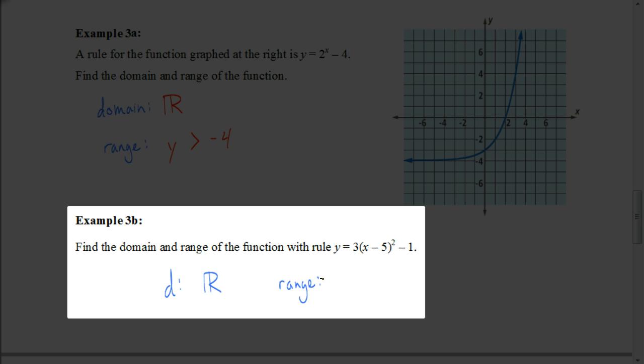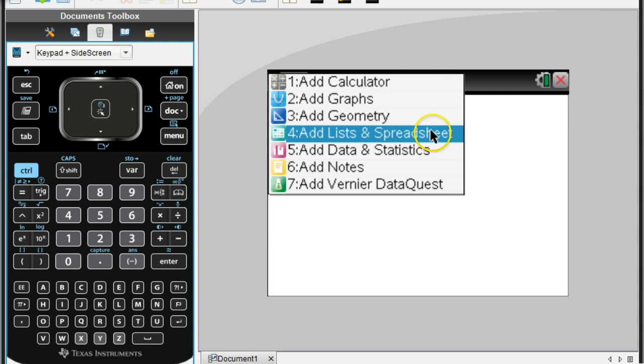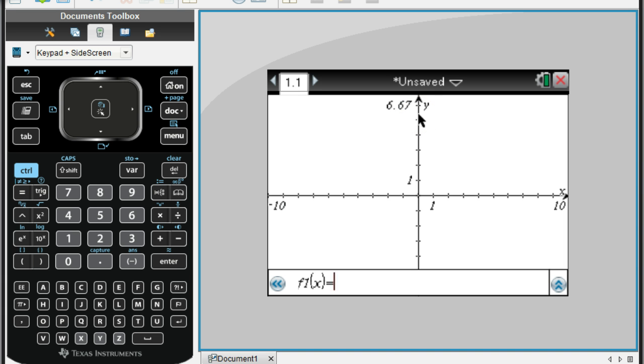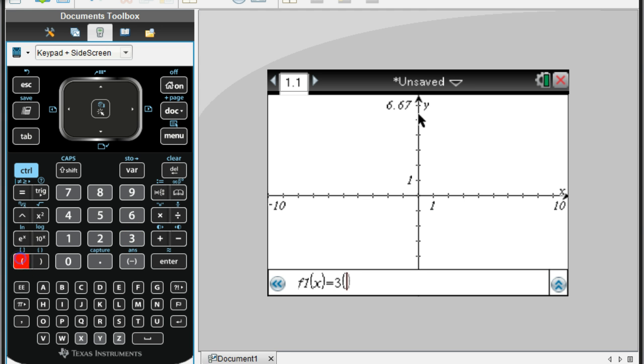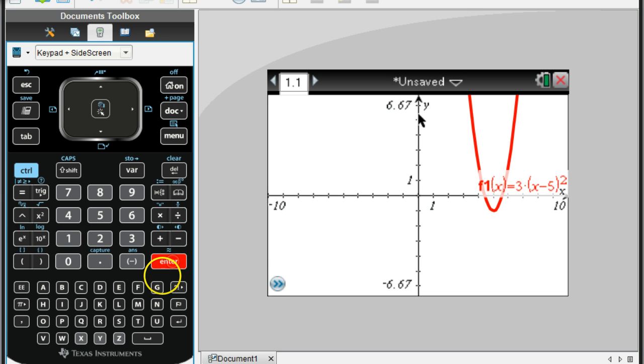But let's figure out what the range would be. So for the range we're going to want to look at the graph. So let's get out your calculator. And we're going to create a graph for that equation. So again, the equation that we're graphing is going to be 3, and then in parentheses, x minus 5 squared. And then it's going to be minus 1. And enter.